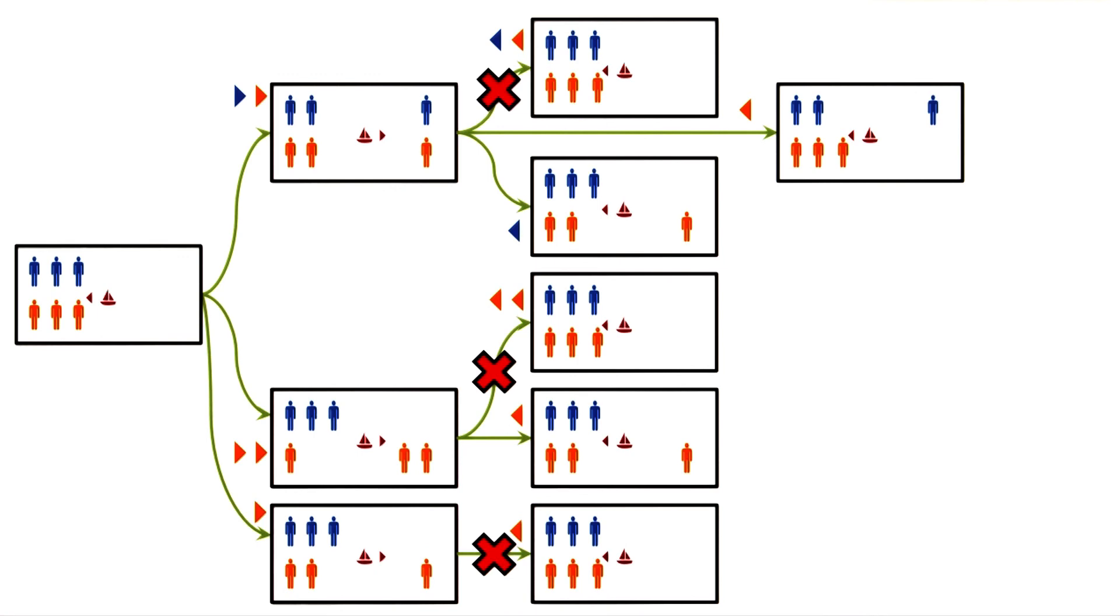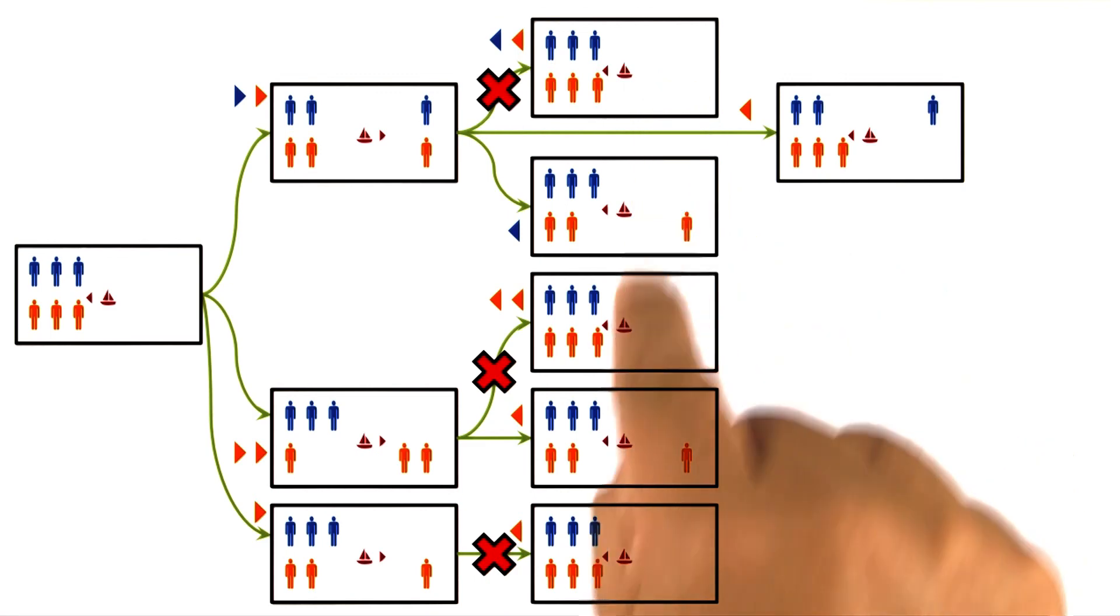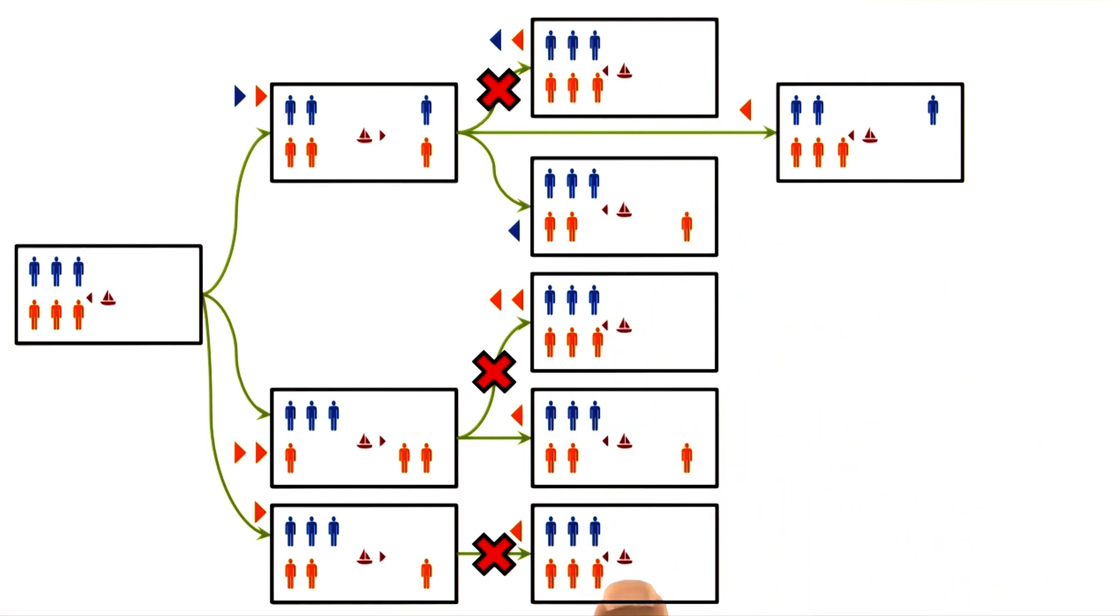This means that we can either provide the generator with some additional abilities, or the tester with some additional abilities, or both. If the generator was smarter, then it would not even generate these three states because they are nonproductive.